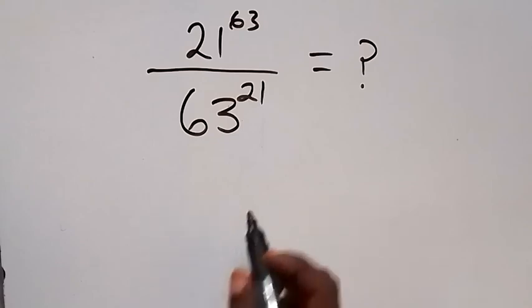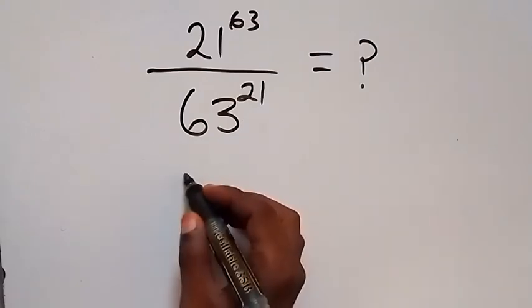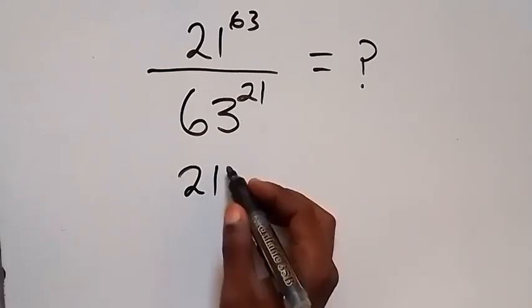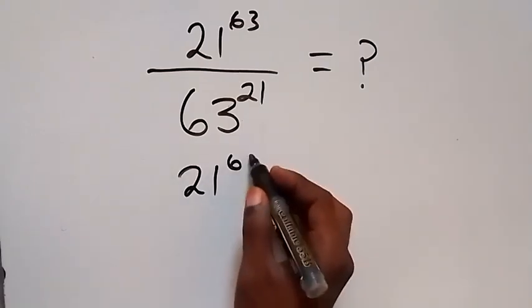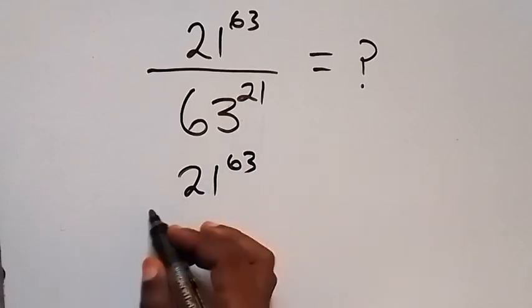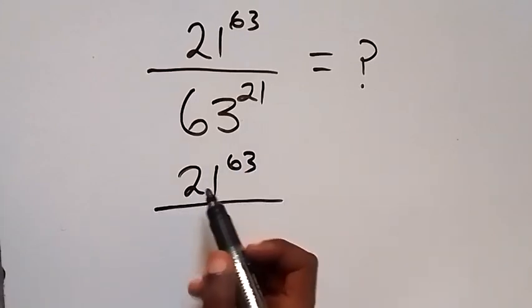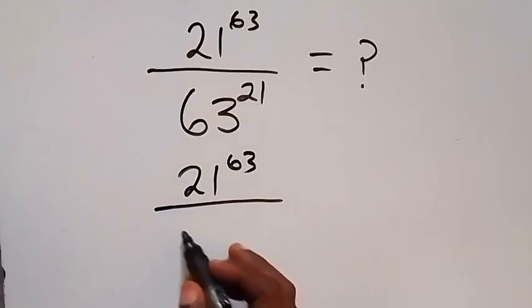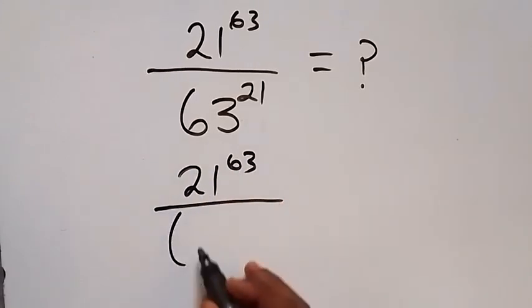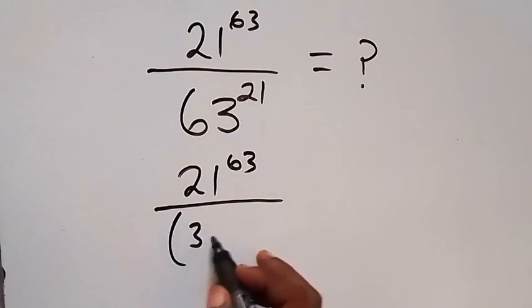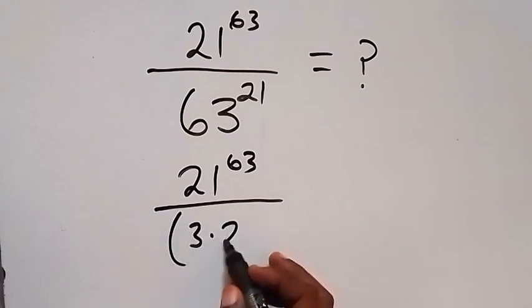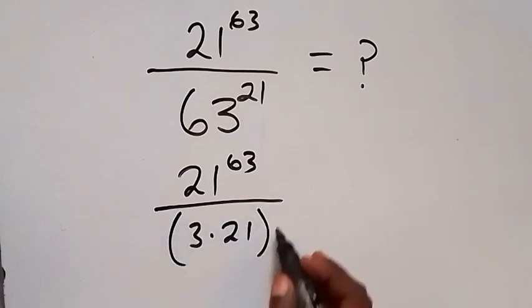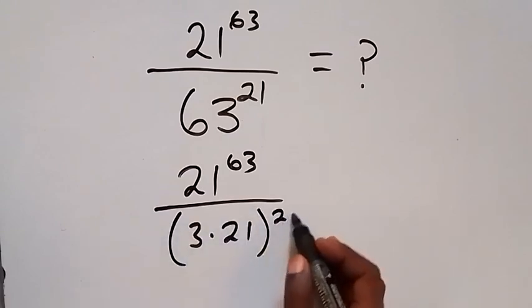From here, we have 21 raised to power 63 divided by — this 63 here we can separate it and write it as 3 times 21, then all raised to power 21.